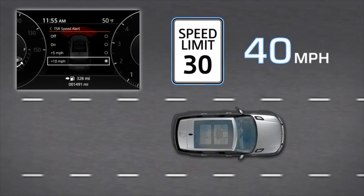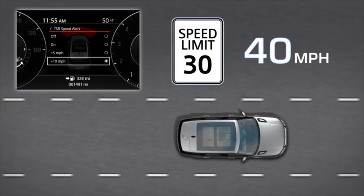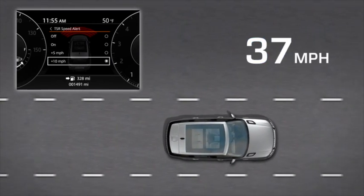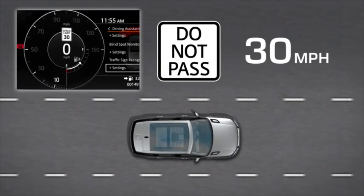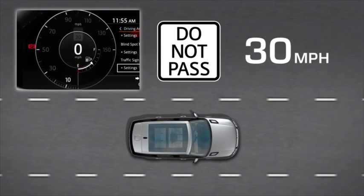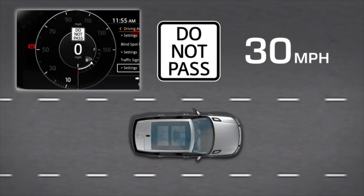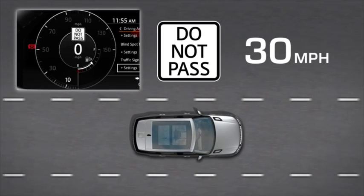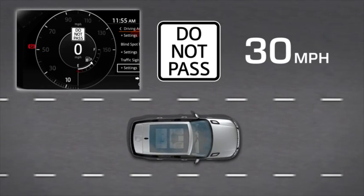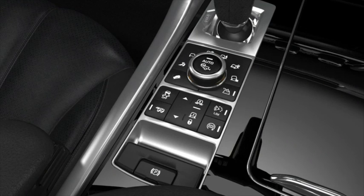No passing zone: when a no passing sign has been detected, the system will display a corresponding sign in the message center. To switch the adaptive speed limiter on, press the LIM button.